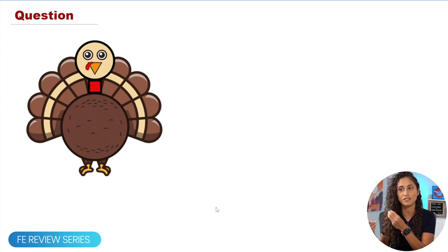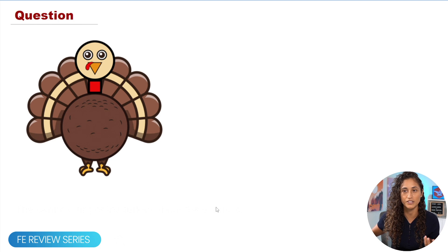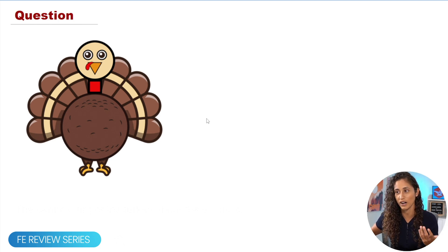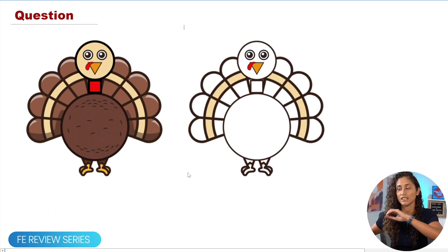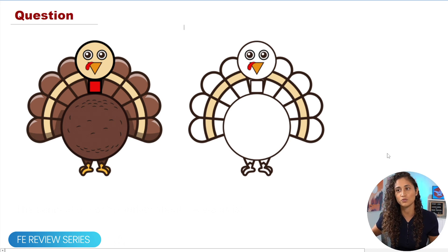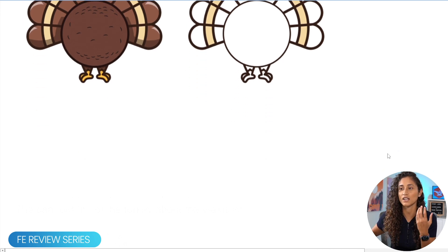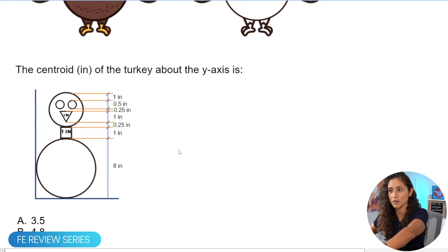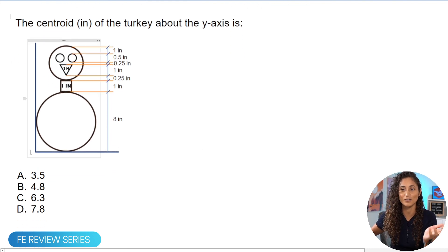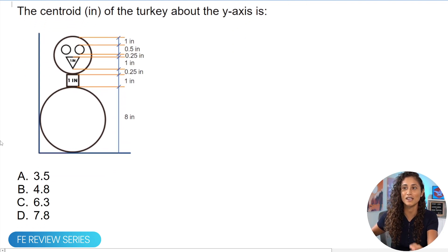This turkey is a little bit too complicated and not something you're going to have on your FE exam, so we can simplify it. Simplifying further just removes the colors. The turkey is still complicated, so we simplify one more time to get a cleaner shape. Now we can find the centroid of this turkey about the y-axis.